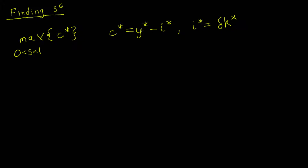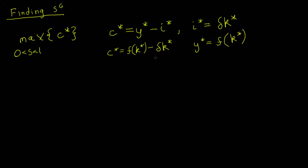We also know that GDP per capita equals the production function evaluated at K star. Plugging these in, we get C star equals F(K*) minus delta times K*. The reason for writing it this way is that a nice intuitive result comes from this form. So we are instead solving the maximization problem where the objective function is F(K*) minus delta times K*, choosing K star.